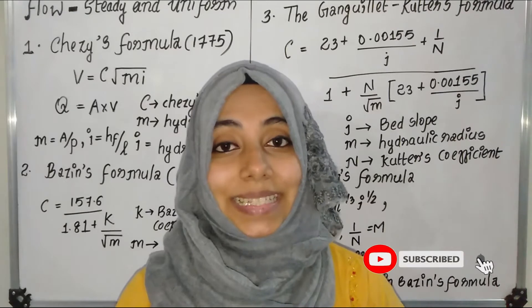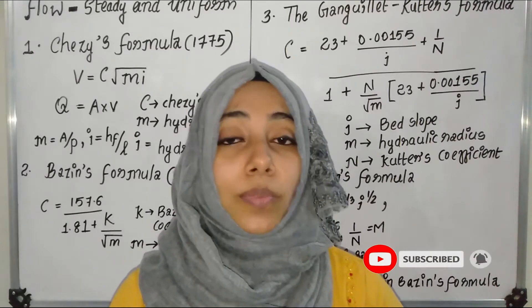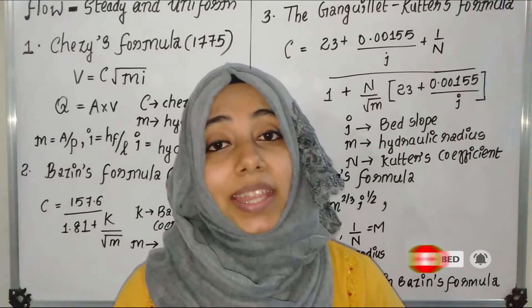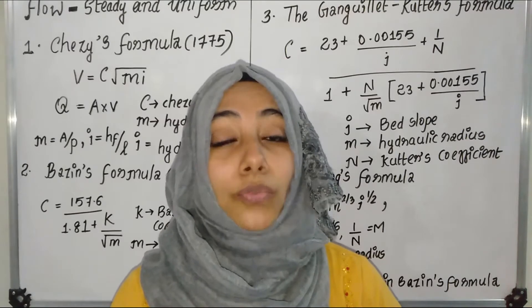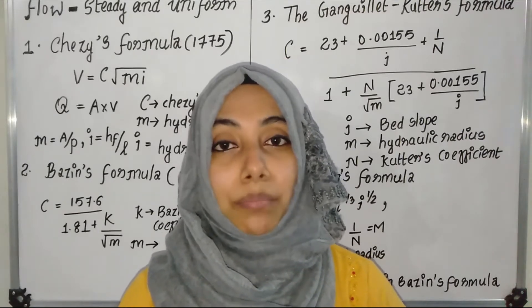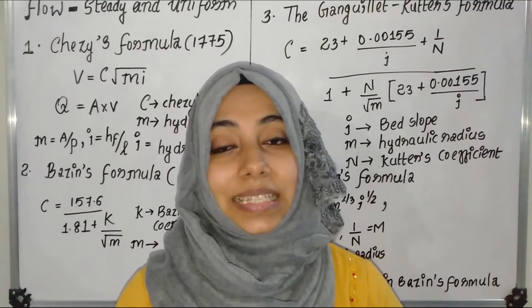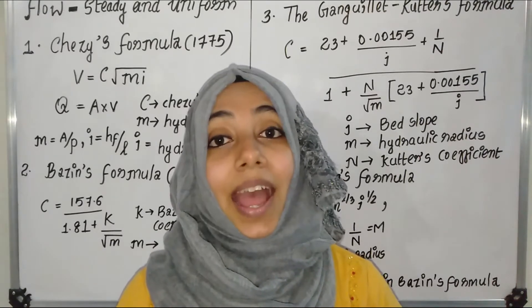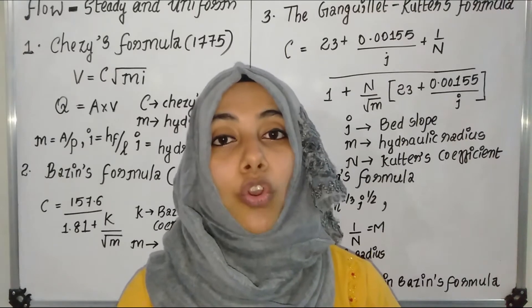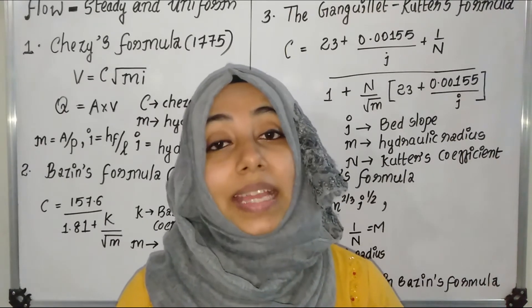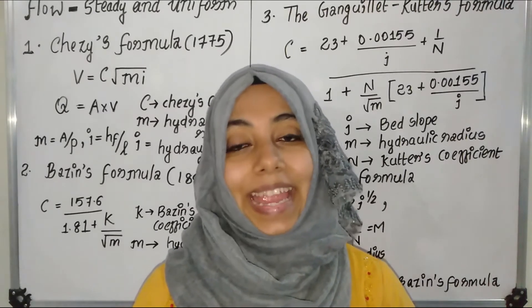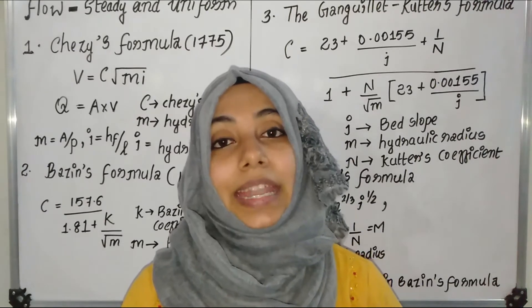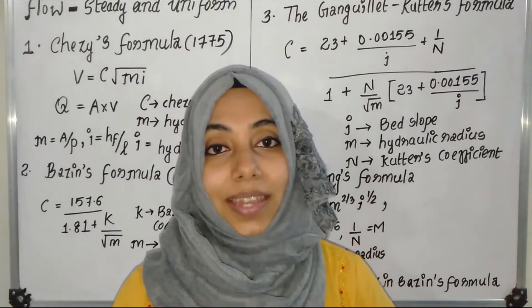First we can look at Chezy's formula. Chezy's formula, we have already studied. V is equal to C into root MI. C is Chezy's constant. M is hydraulic mean radius. I is hydraulic gradient or bed slope. I is equal to HF by L. HF is head loss, L is length of the channel.